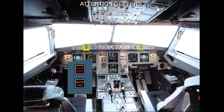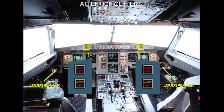In front of each pilot there are two attention getters: a red master warning and an amber master caution. As a further means of getting the crew's attention, there is a loudspeaker on each side of the cockpit for oral alerts and synthetic voice messages.